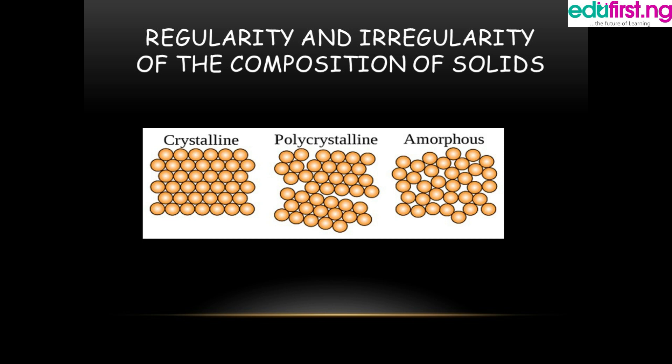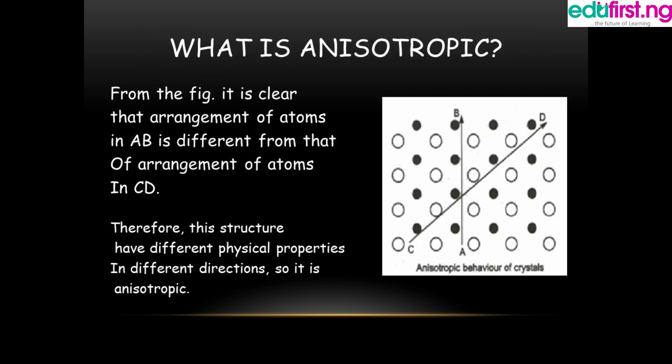Before moving forward, let's understand what anisotropic means and why crystals behave as anisotropic. From the figure, it is clear that the arrangement of atoms in direction A-B is different from the arrangement of atoms in direction C-D. Therefore, this structure has different physical properties in different directions, making it anisotropic. The A-B direction appears neatly compressed while the C-D direction appears dispersed.